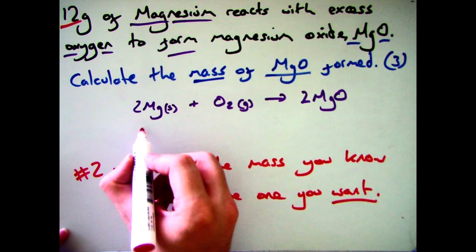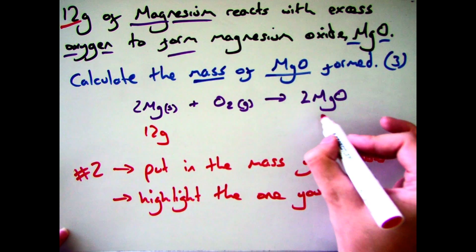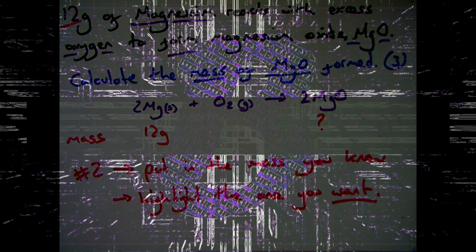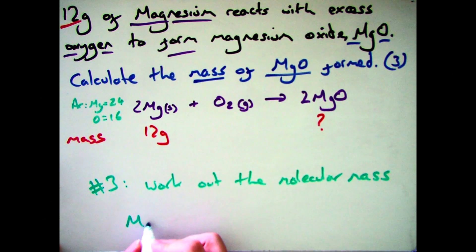So you now need to fill in what you know. So we have 12 grams of magnesium and we need to know how much magnesium oxide we've got. Now the atomic mass will always be given to you in the exam question. As you can see I've put here next to the balanced equation.